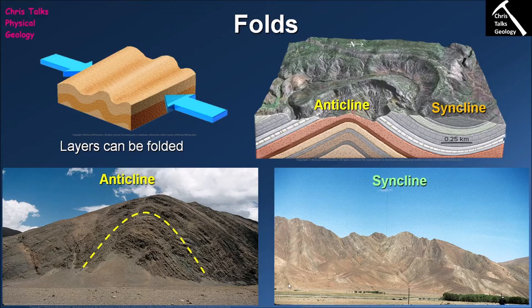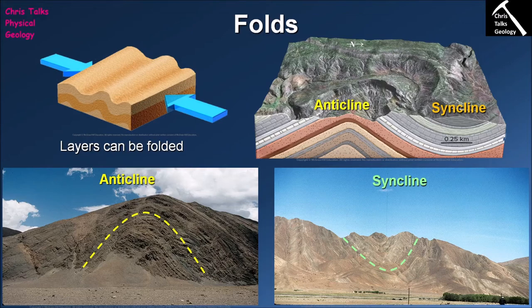In this situation we have a syncline, which you can pick out by following this layer of rock. We have the trough shape, so we instantly know this is a syncline. The rocks in the core of our syncline are the youngest, whereas the rocks towards the edge are the oldest. As you can see, folding of rocks is relatively straightforward, and it's easy to identify the two main types: anticlines and synclines.